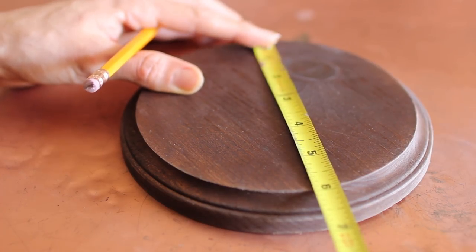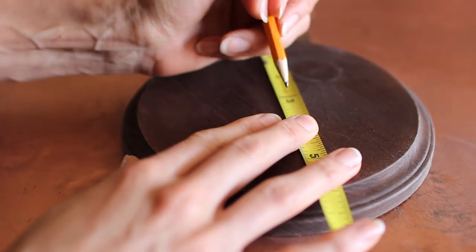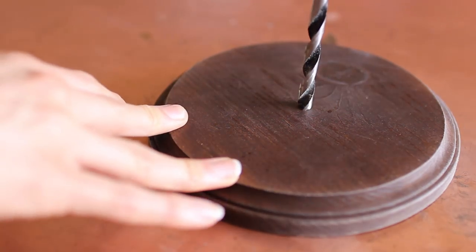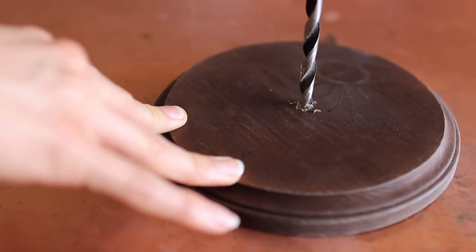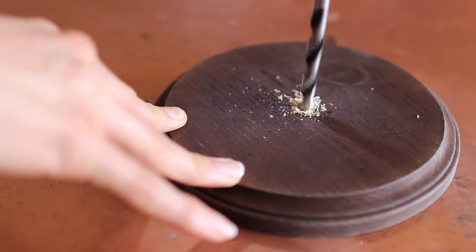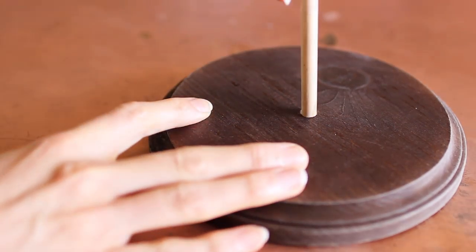I then measured and marked the middle of the wood base, drilled a hole right in the center, and then made sure that my dowel fit because we want the skeleton hand to be standing straight up, so this is going to be the support system for it.